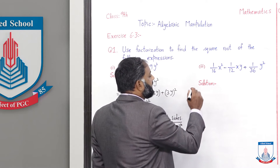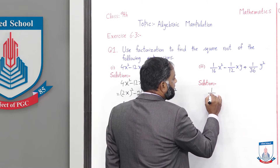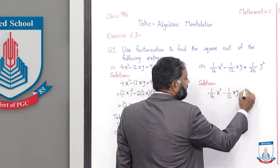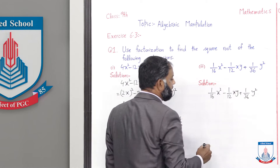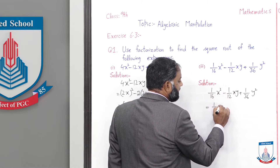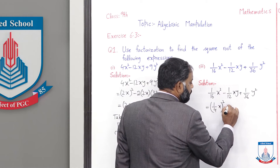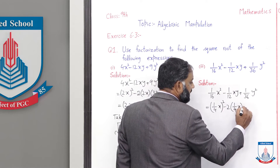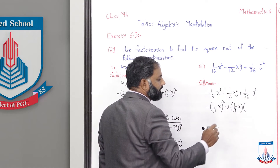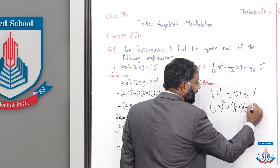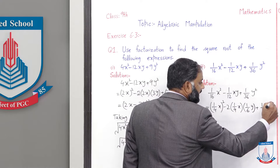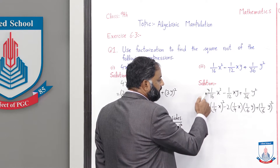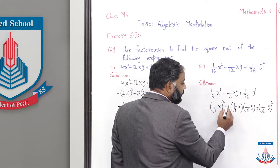अब इसी question का part 3 solve करेंगे: 1/16x² - 1/12xy + 1/36y²। जो first term है यह (1/4x)² हो गया। Minus 2ab — two formula का a की value 1/4x है। Last term (1/6y)² बन रहा है तो b की value 1/6y होजाएगी। Square खोलें: 1/16x² first term आई।